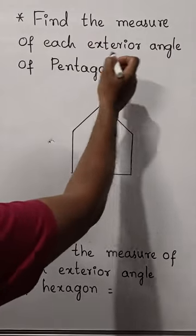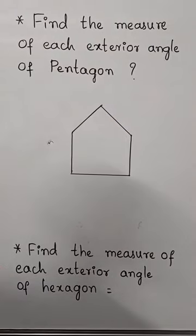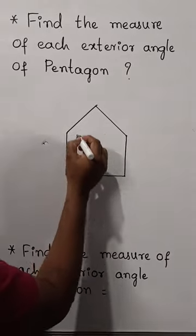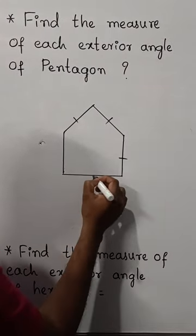Find the measure of each exterior angle of pentagon. Yes, since it is a regular polygon, therefore all the sides are equal in length.